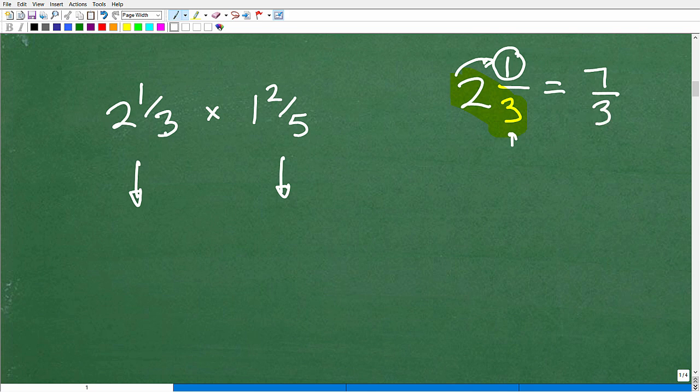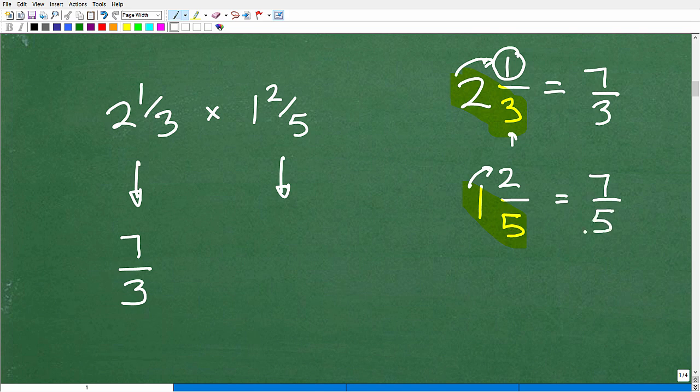So let's just practice it again. 3 times 2 is 6 plus 1 is 7. So this is 7/3. Now, let's go ahead and have you practice this guy right here. Let's see if you can write this as a mixed number. So 1 and 2/5. So it's going to be 5, 5 times 1 is 5. Then we're going to add this number here. So that is going to be 5 plus 2 is 7. And then I have my little 5 here, 7/5.